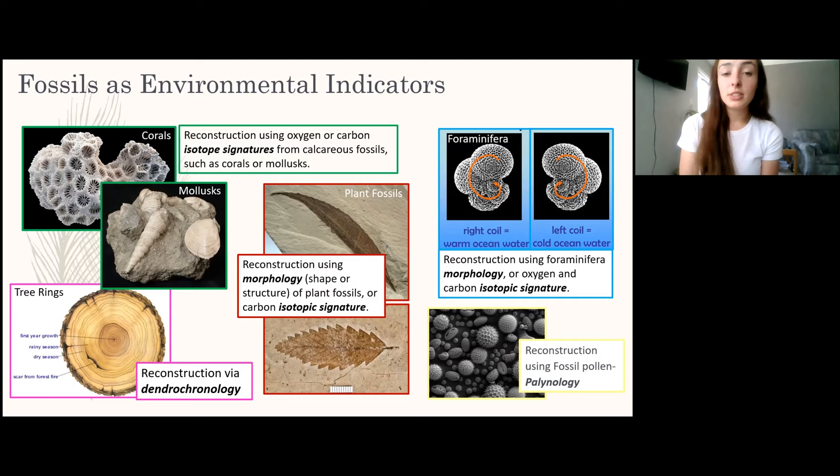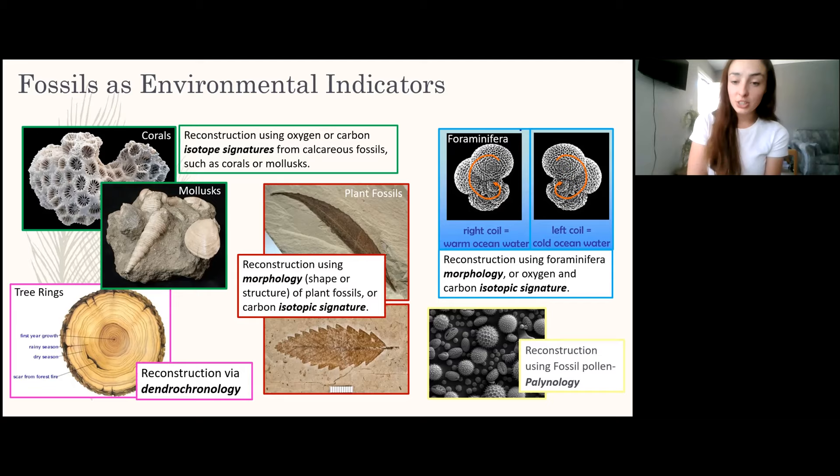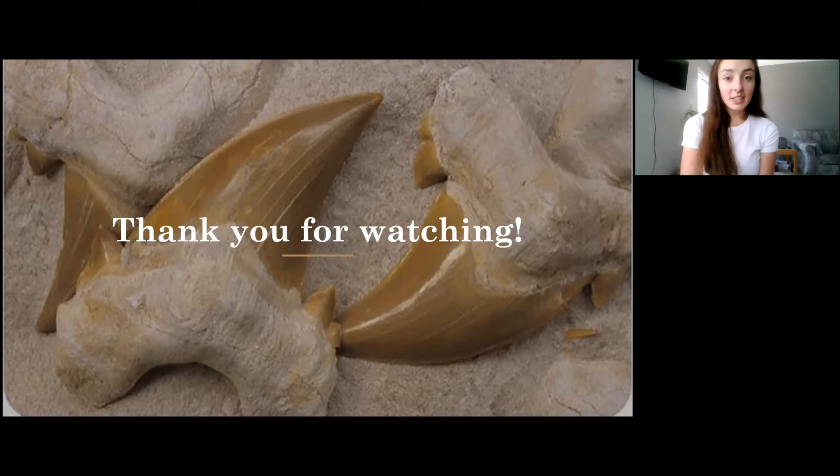We can also reconstruct atmospheric and environmental conditions using palynology — the study of pollen. Under a microscope, pollen has complex, beautiful structures, and both the structure and composition of pollen tell us a lot about the environment during the time it was distributed. For more on fossils as paleo-environmental indicators, future episodes will cover stable isotopes in depth.